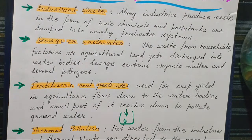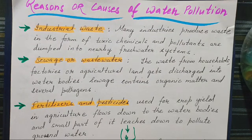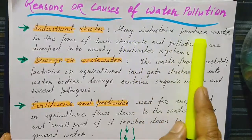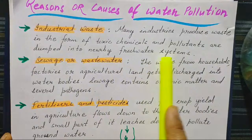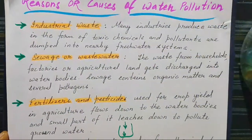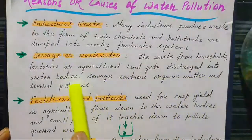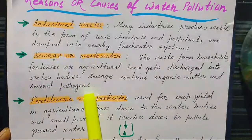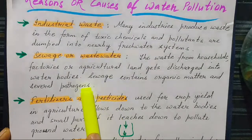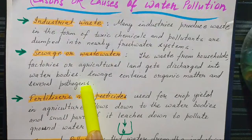The causes of water pollution include industrial waste: many industries produce waste in the form of toxic chemicals and pollutants, all of which are dumped into nearby freshwater systems causing water pollution. Again, sewage or wastewater: waste from households, factories, or agricultural land gets discharged into water bodies. Sewage contains organic matter and several pathogens — disease-causing germs — and if any life forms come into contact with these pathogens they will get different kinds of diseases.